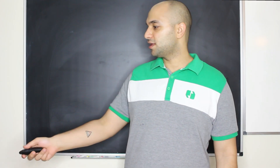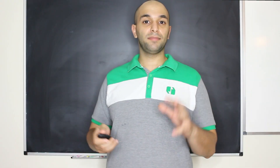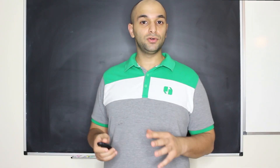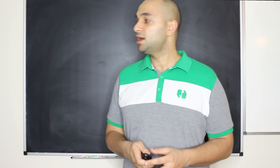This is work I'm doing with Gary Choi at the Mahathirman Group at Harvard, and we're working with Clara Spottiswood in Cambridge and her student Tanmay Dixit who's doing the experiments in Zambia. I'm going to talk about a very cool application of morphometry.